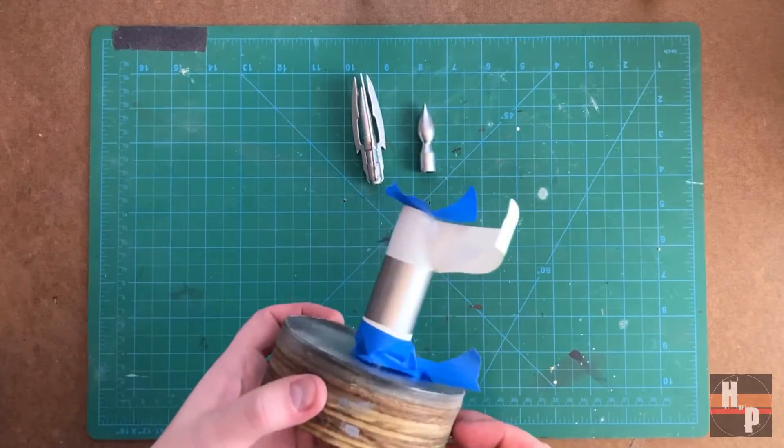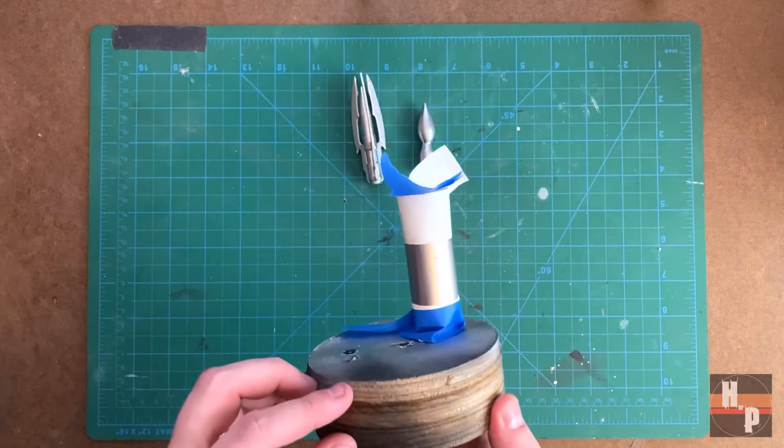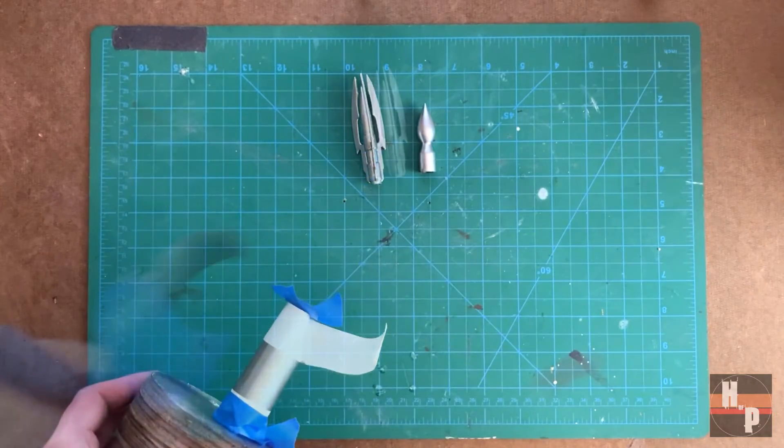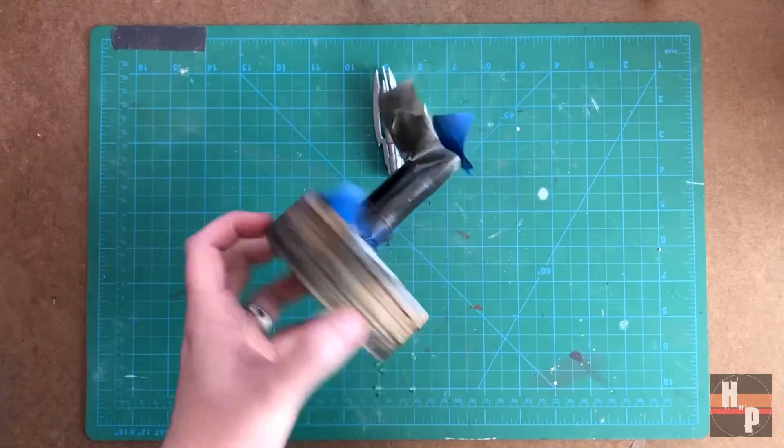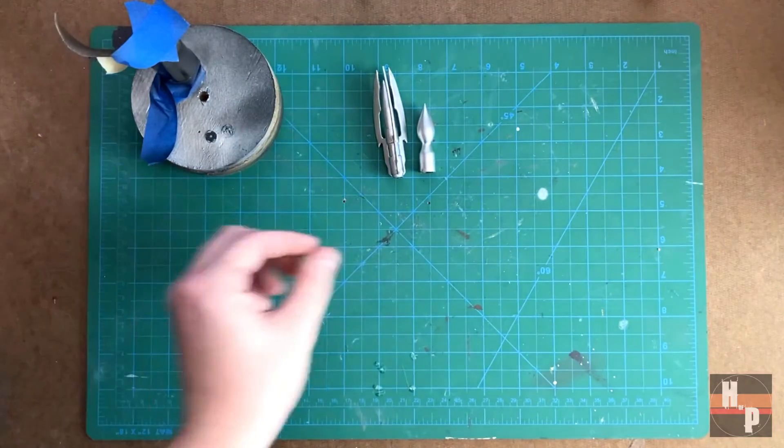I taped off the spider wire tip and used the flat black spray paint to create a band. While the black dries, I'm going to paint the acid vial on this tip.